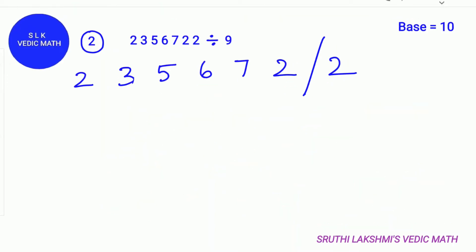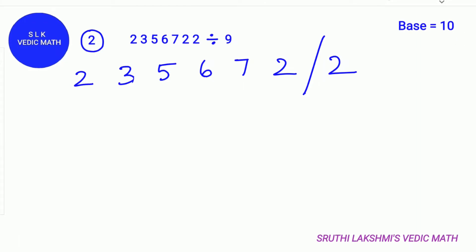Let's see another example. 2, 3, 5, 6, 7, 2, 2 divided by 9. The base for 9 is 10. The base 10 has 1, 0. So we place the remainder stroke 1 digit from the right side.